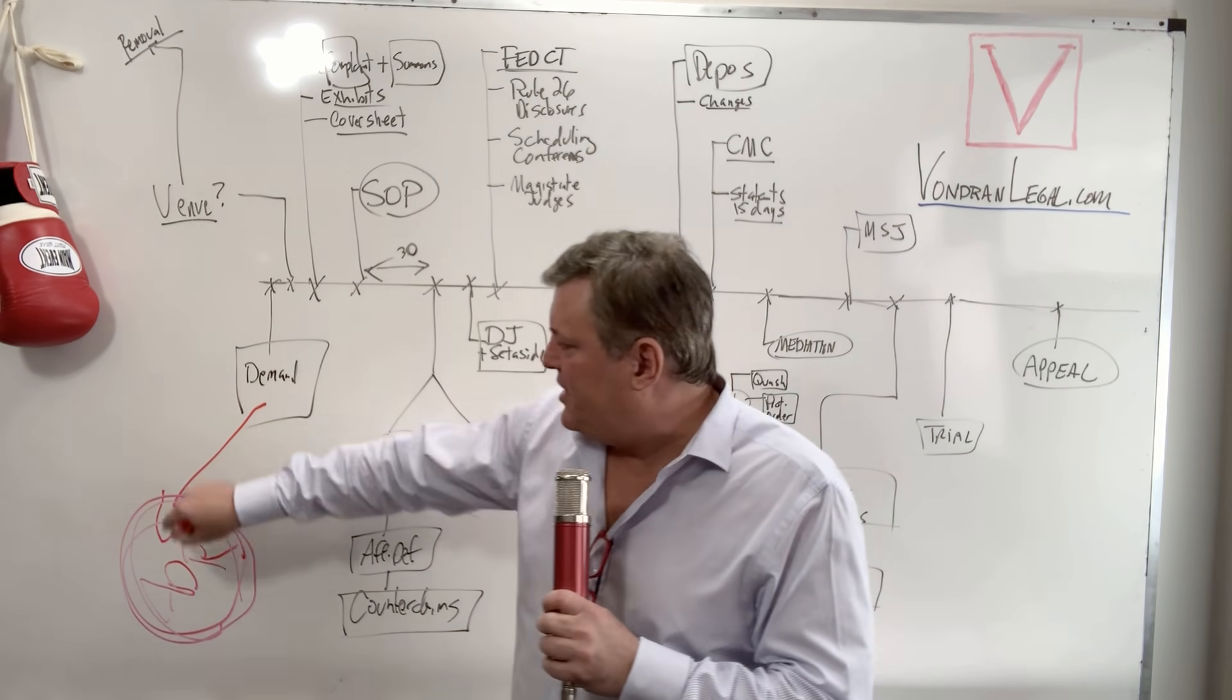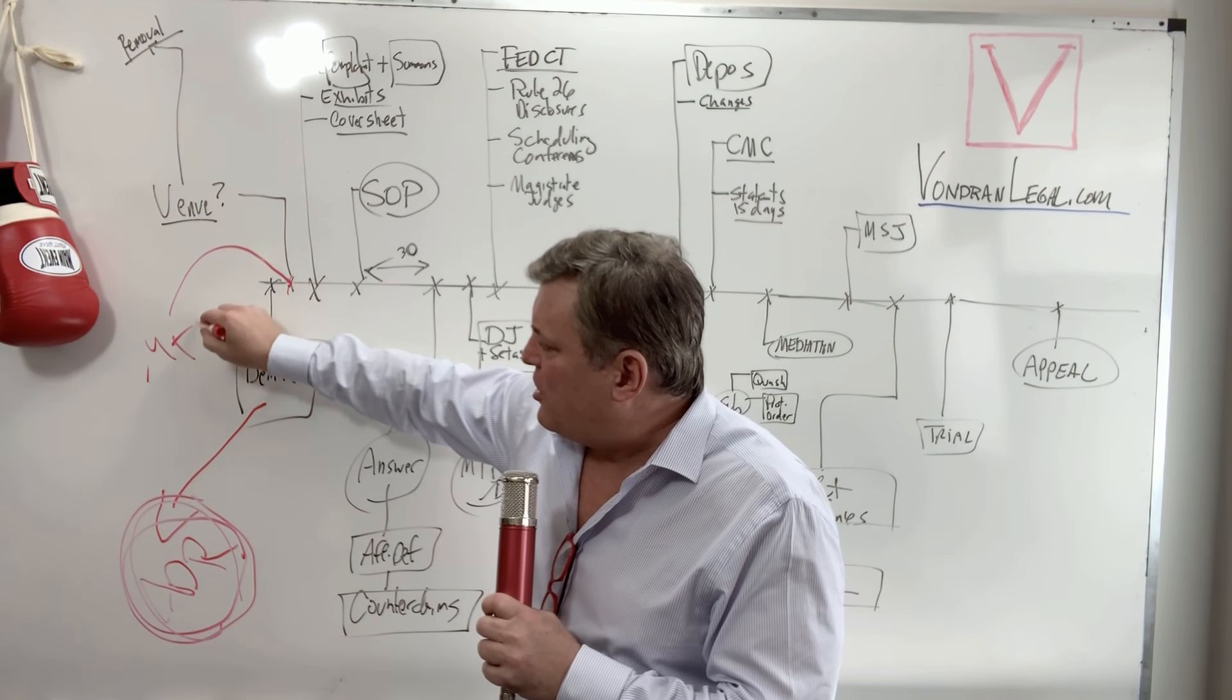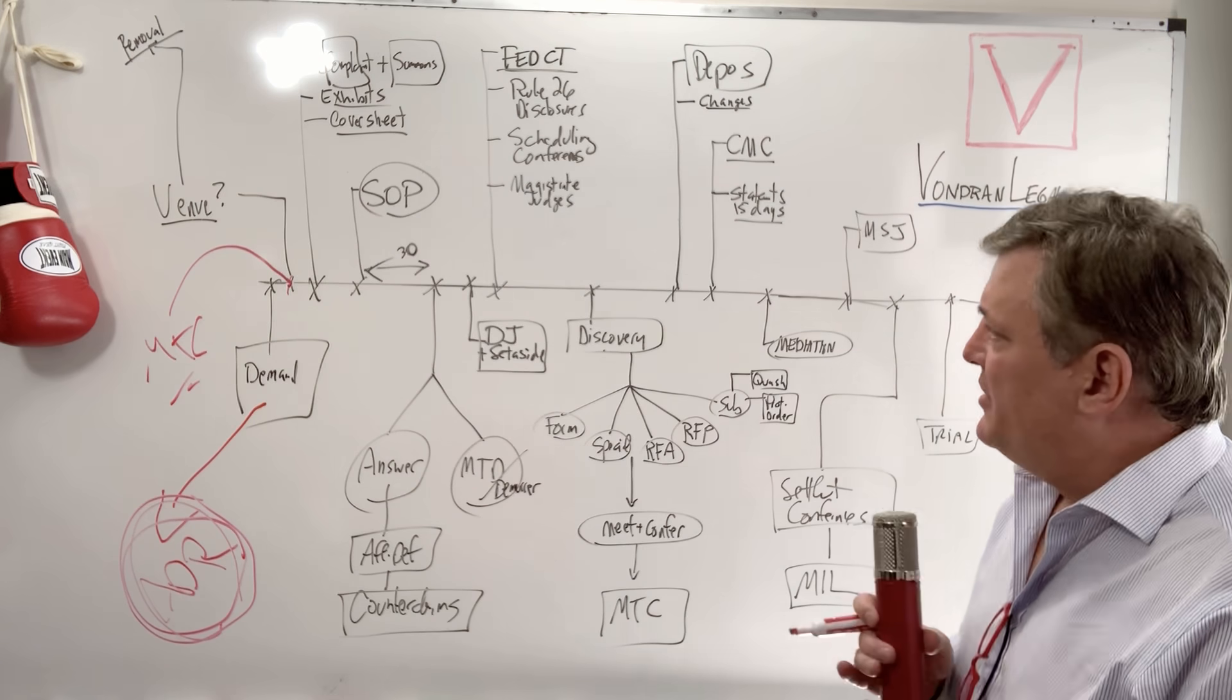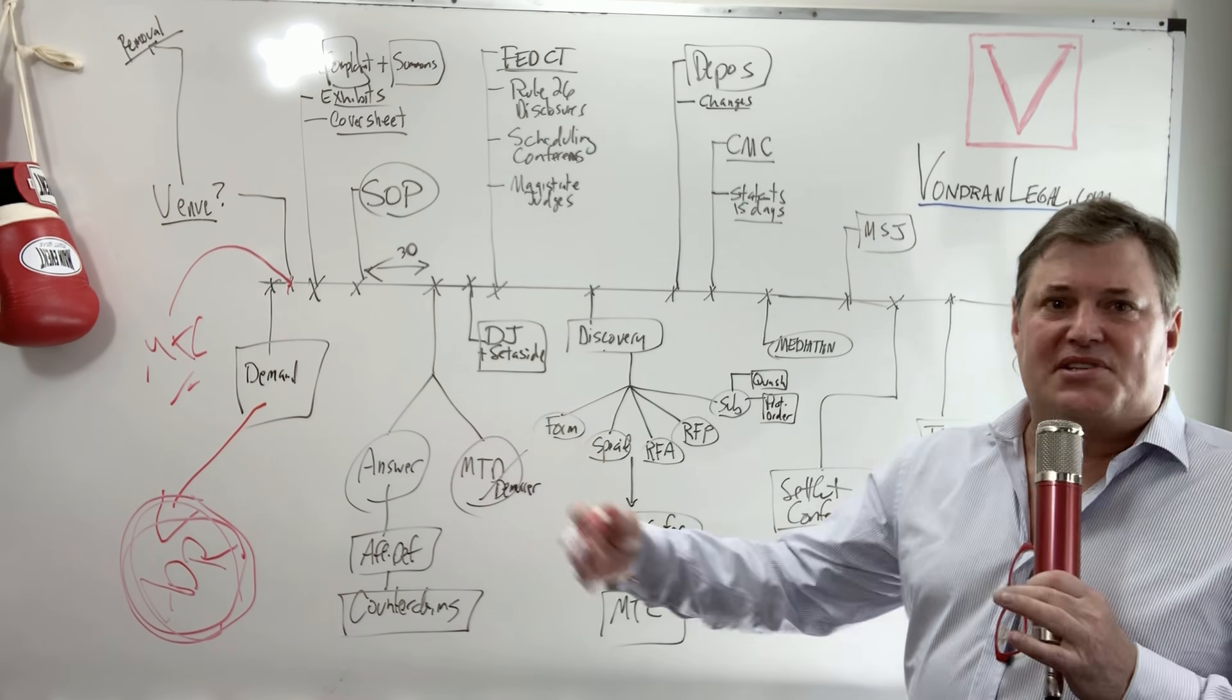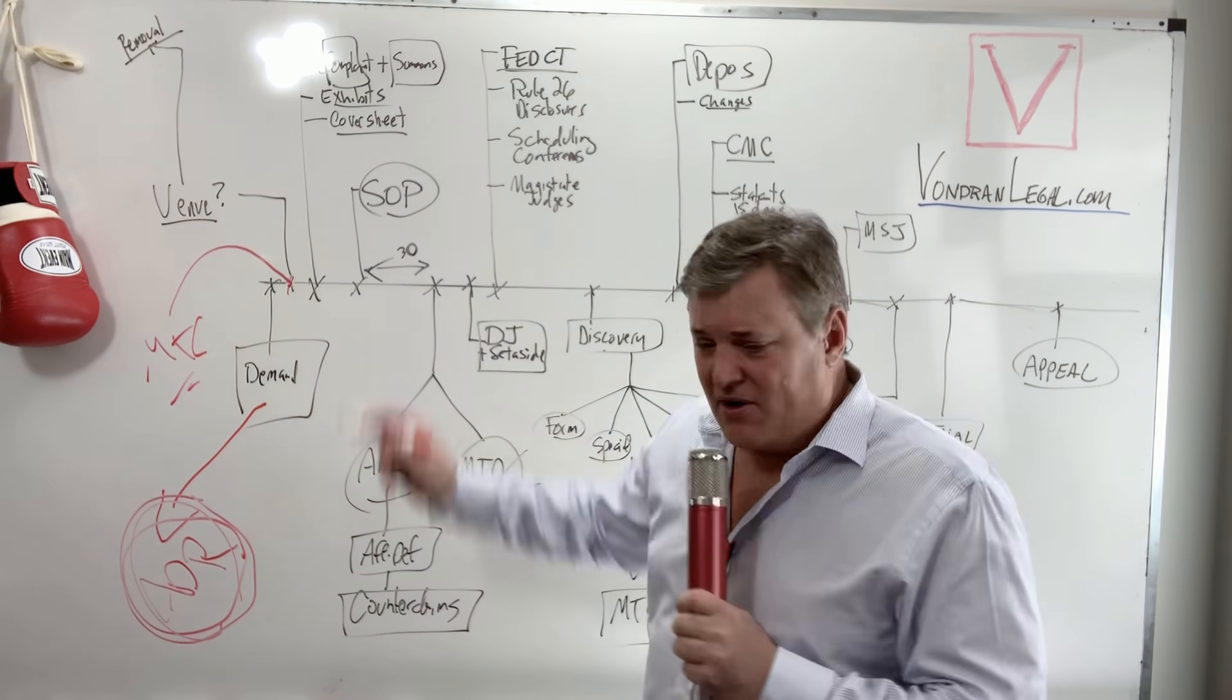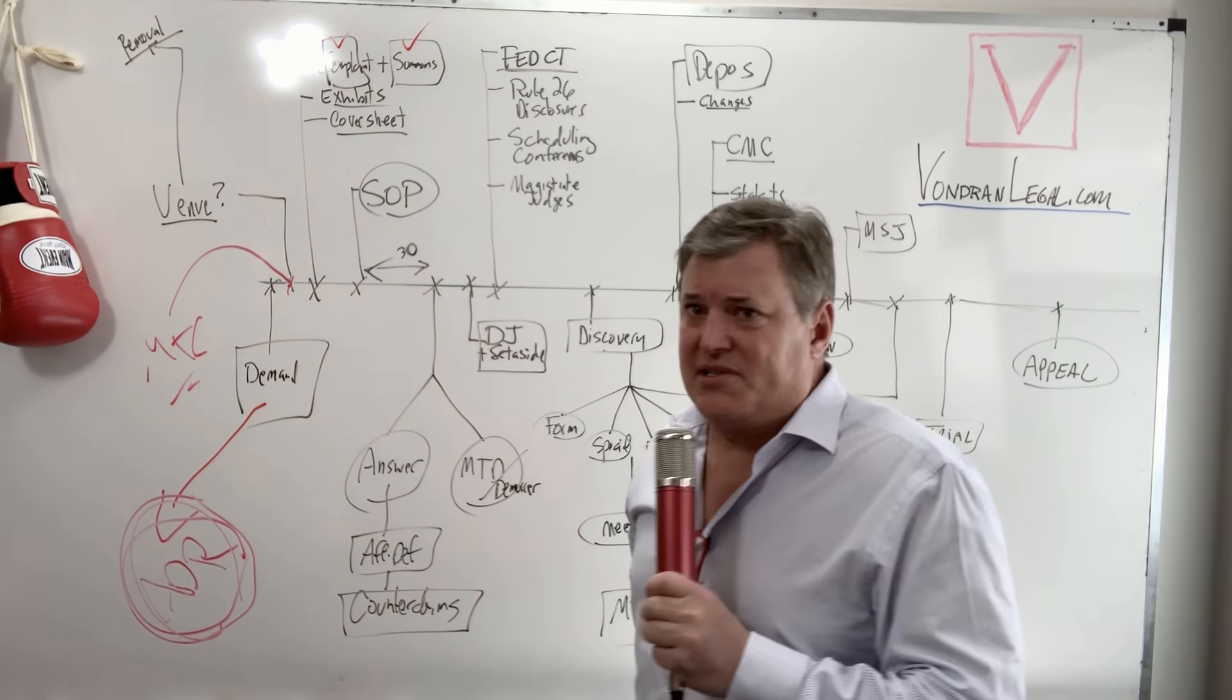So you have to read your contracts carefully. Sometimes over here, we have motions to compel arbitration. That could be part of a litigator's thing. But let's just assume there's no arbitration clause, and you have either a state or a federal issue, and you want to get into court. So here's where everything starts, of course, with the complaint and the summons. Let's check that off there.